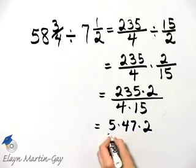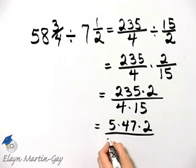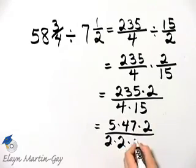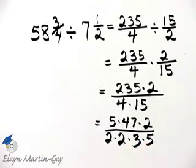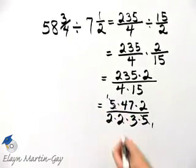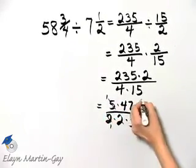And then I have times two over, I'll write four as two times two, and I'll write fifteen as three times five. And then we can see now the common factors that we divide out, a common factor of two.